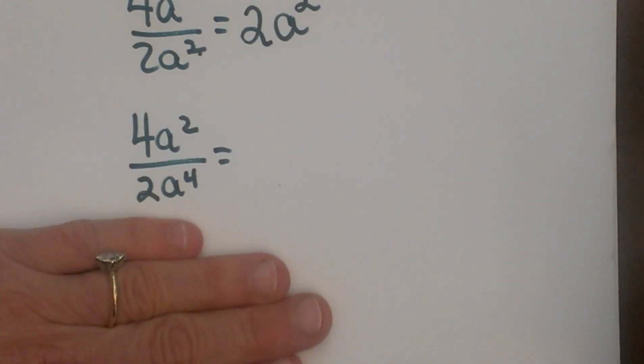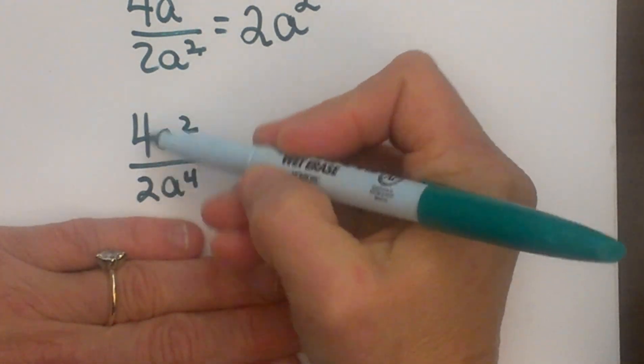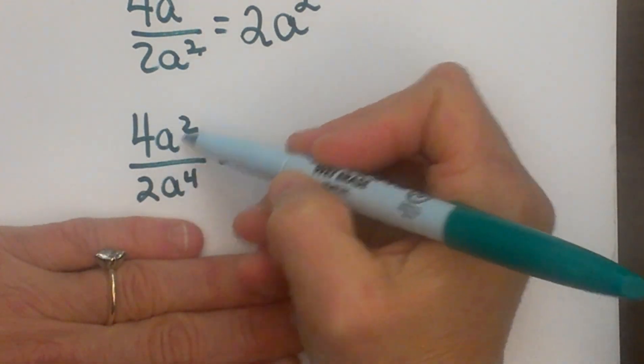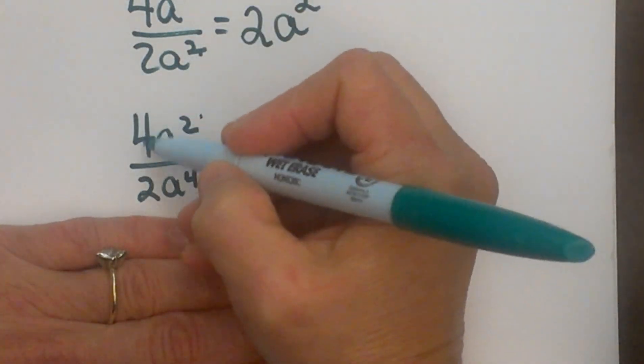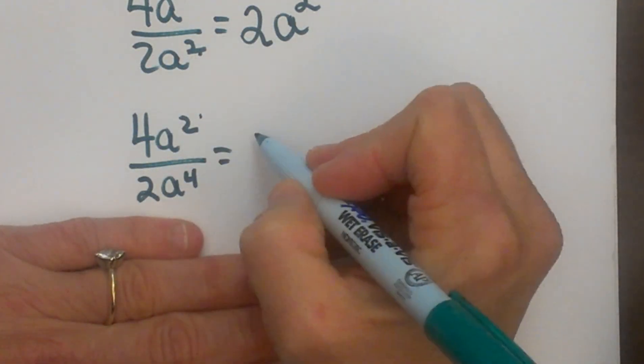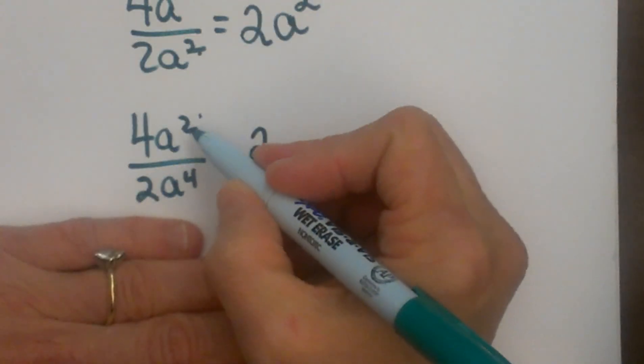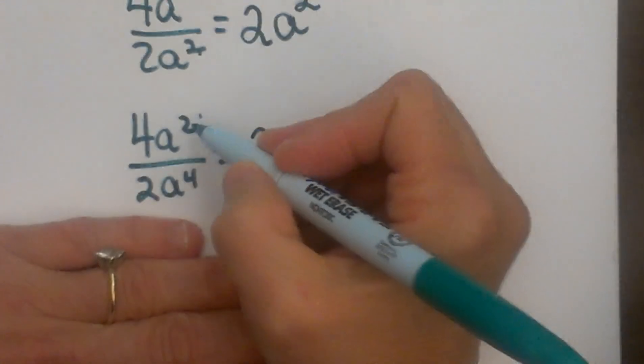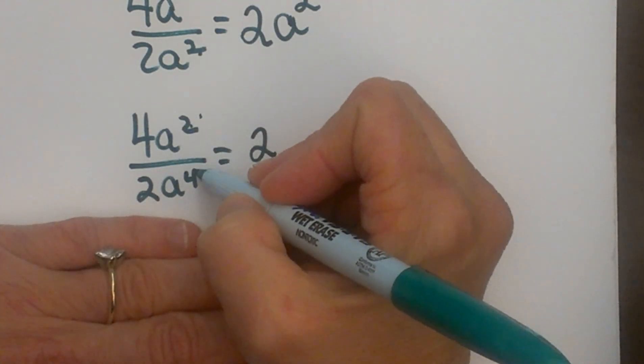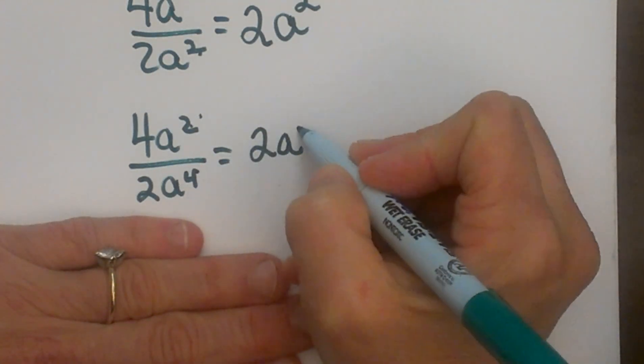And then now let's look at one that is a little bit different, and we will do another video on this one. But you are going to divide, so this time you get 4a² divided by 2a⁴. So I have switched the exponents here. So you are going to divide your coefficients, and so you are going to get 2, and then a² divided by a⁴ is actually you are subtracting top minus bottom, so it is going to be a to the negative second.